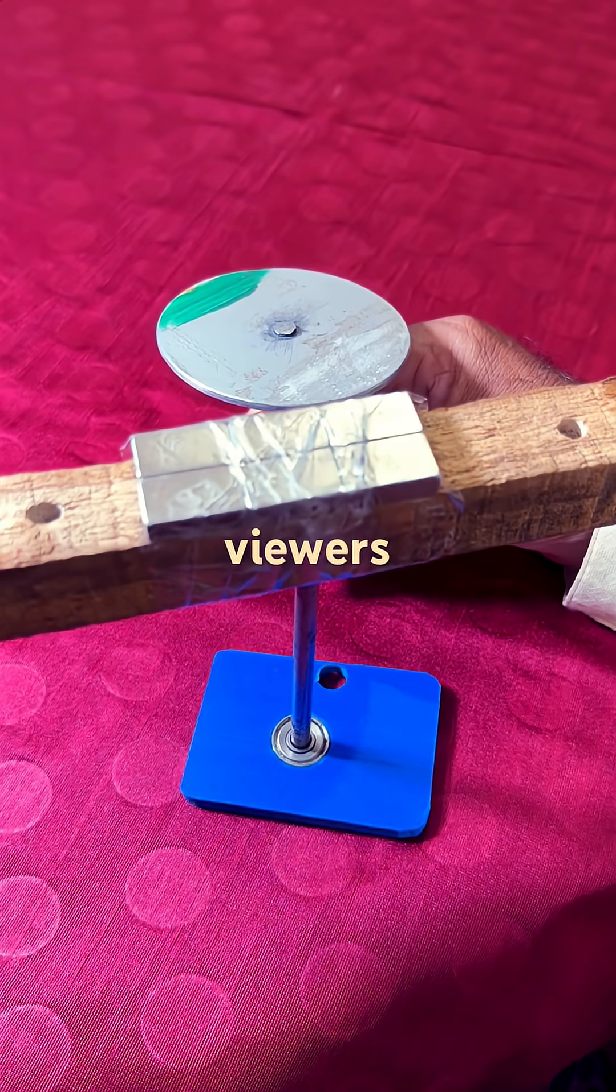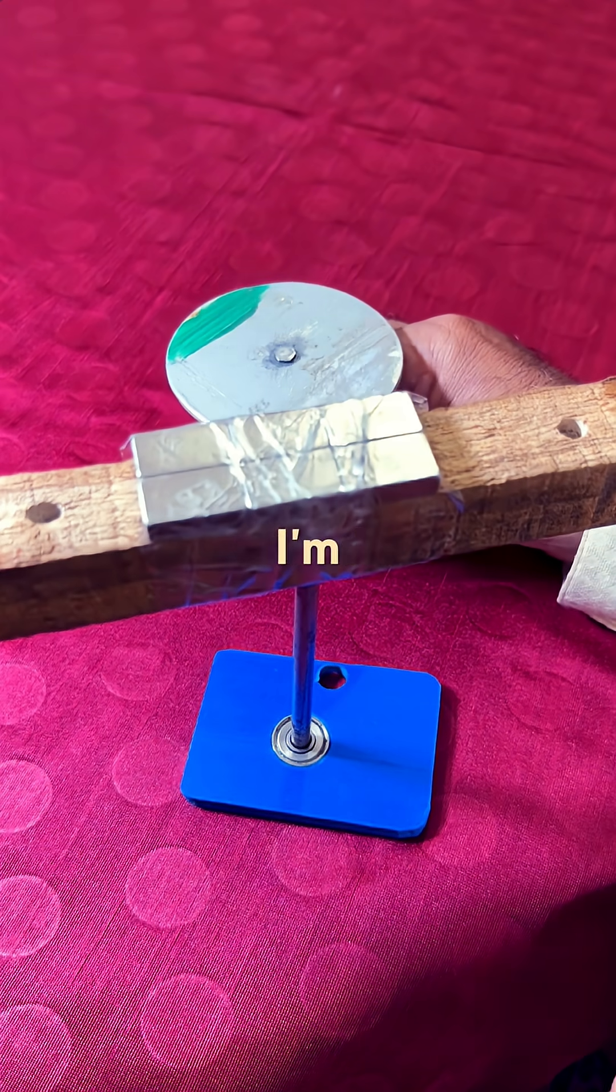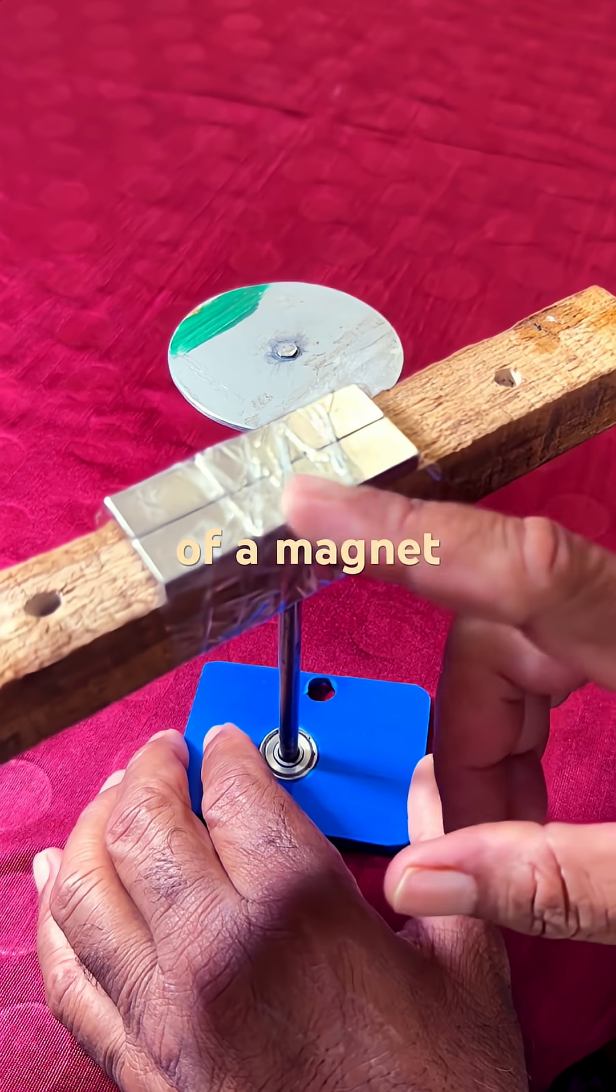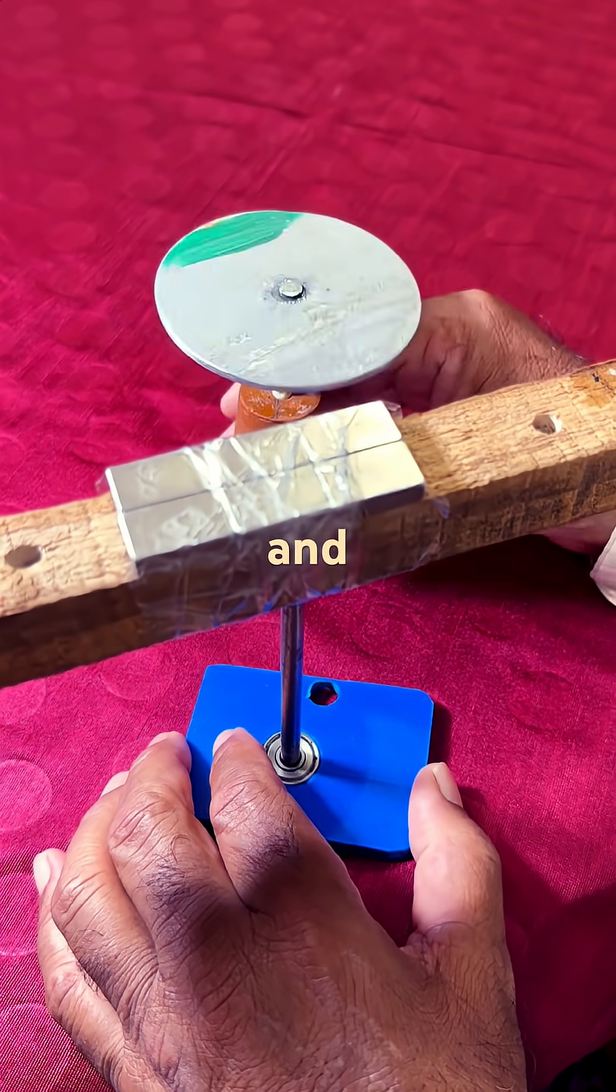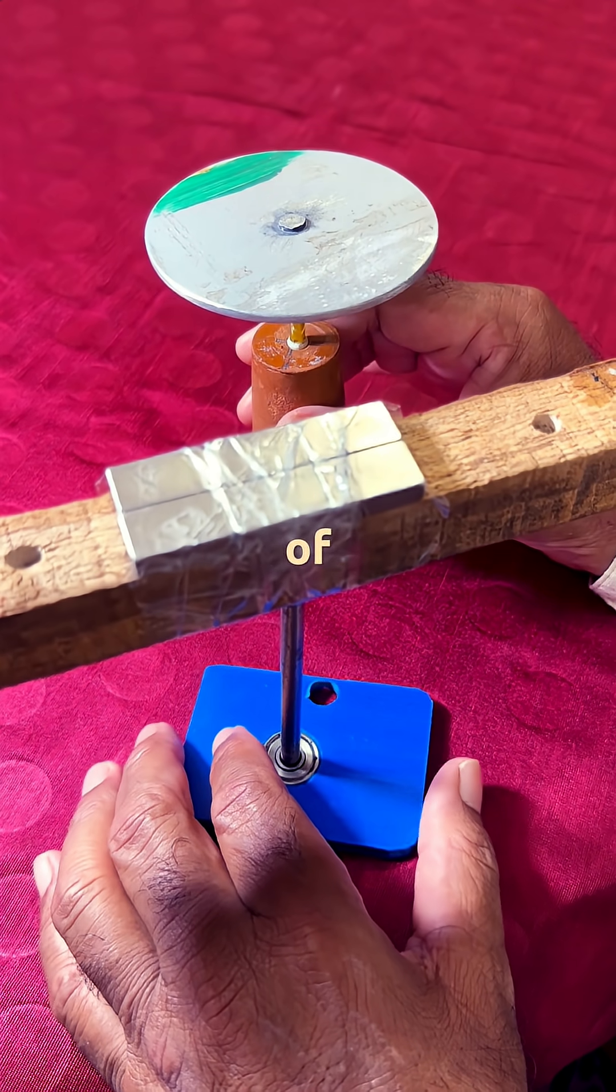Hi viewers, in this episode I have another arrangement of a magnet assembly here and this aluminum disc capable of rotation.